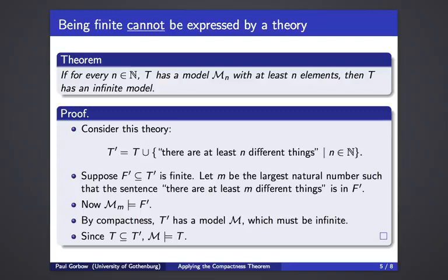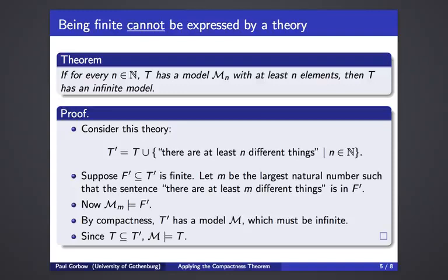Our strategy is to apply the compactness theorem. The compactness theorem says it is sufficient to show that every finite sub-theory has a model. If we look at some finite sub-theory F prime of T prime, we can notice that only finitely many of the sentences 'there are at least N different things' appear in F prime. So for some natural number, that must be the largest one that appears in F prime — let's call that number m. The assumption of the theorem was that for every natural number, T has a model with at least that many elements. Simply apply that to this natural number m, and we get a model of F prime. Please pause and convince yourself that we do actually get a model of F prime from the assumption of the theorem.